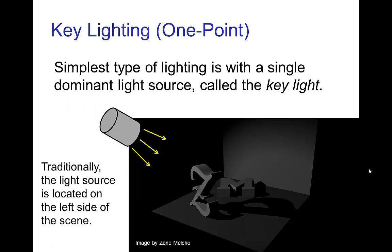Now the most basic use of lighting in illuminating a scene is so-called one-point lighting or key lighting. So if we have a scene and we have basically one dominant light source illuminating that scene, this is referred to as one-point lighting.